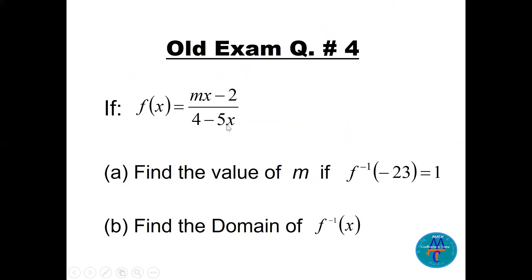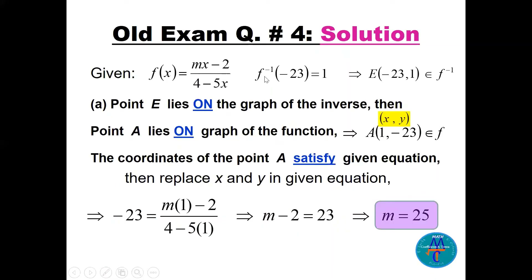Question number four: we have a rational function f(x) = (mx − 2)/(4 − 5x). Find the value of m if f⁻¹(−23) = 1, then find the domain of the inverse. Since f⁻¹(−23) = 1, the point (−23, 1) lies on the inverse, so (1, −23) lies on f. Substituting x = 1 into f(x) = −23, we cross-multiply and solve to get m = 25.